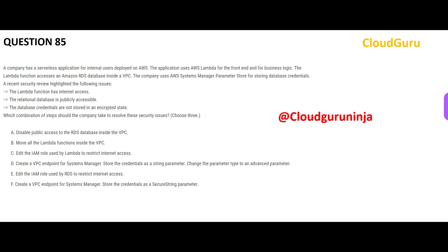In this problem statement, there are three issues we want to find answers for. The first issue is that your Lambda has internet access — we have to stop that. We will move Lambda functions inside a VPC, because once inside a VPC it will not have internet access.